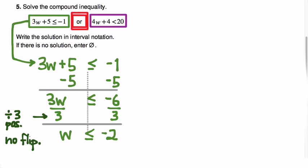Here we didn't divide by a negative — we divided by a positive — so we don't need to flip. But if we did divide by a negative number, we would need to flip the sense of the inequality. That's the only additional thing to keep on your radar when solving linear inequalities that makes them slightly different from solving linear equations.